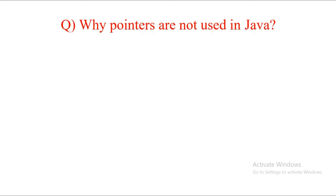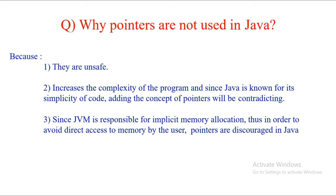The second question is: why are pointers not allowed in Java? The basic reasons are: first, they are unsafe. Second, they increase the complexity of the program, and since Java is known for its simplicity, adding pointers would contradict that. Third, and most importantly, the JVM is the one responsible for allocating and deallocating memory. Pointers point to particular memory locations, and since JVM handles that internally, there is no need for pointers. To avoid direct memory access by users — who could perform faulty operations and manipulate memory locations — pointers are discouraged in Java.